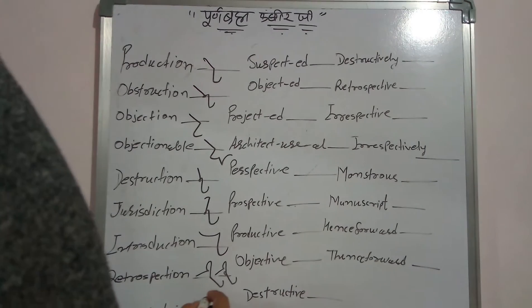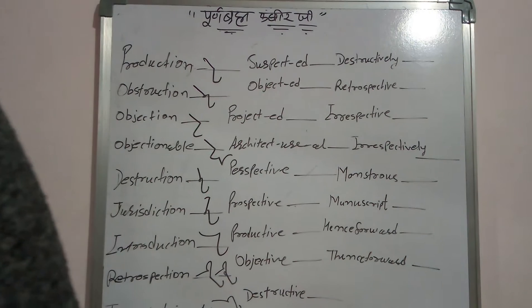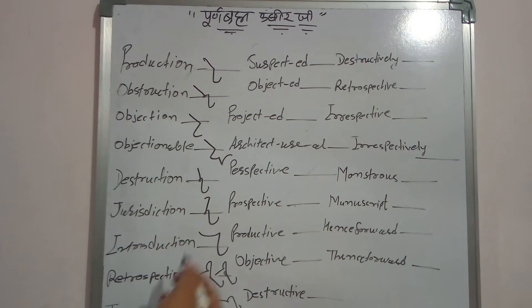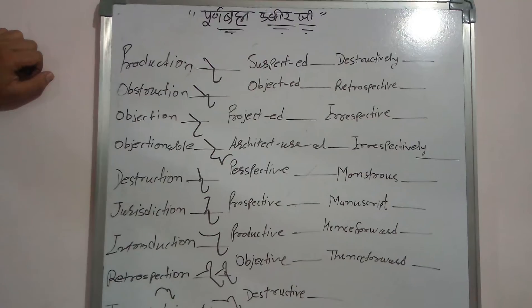Imperfect. Imperfect. Perfect. Imperfect, imperfection, imperfectly — के लिए एक ही outline बनेगी? बराबर। ऐसे imperfection.